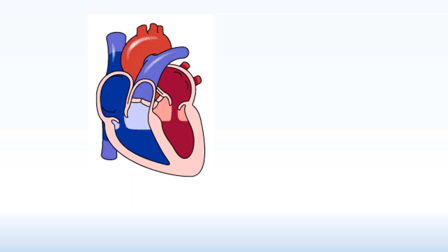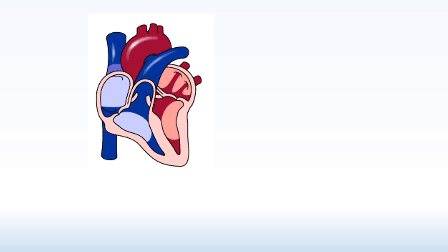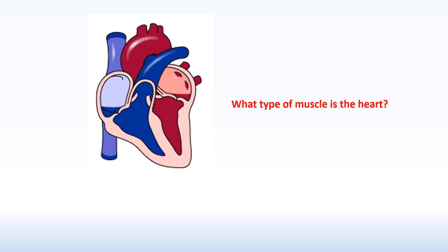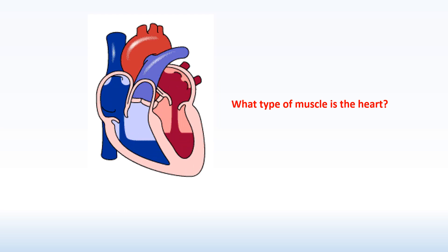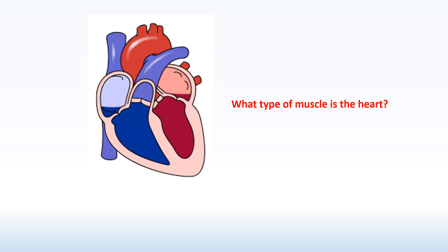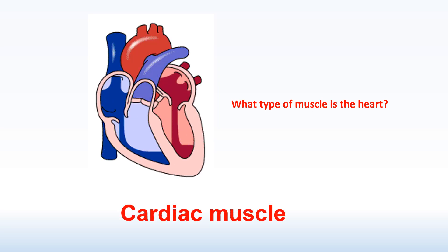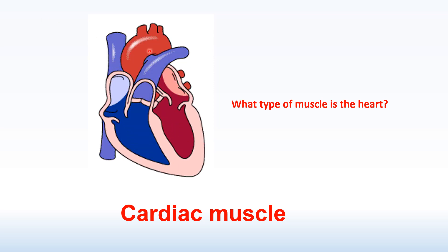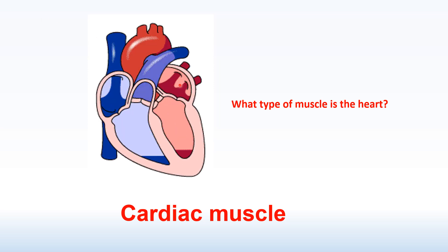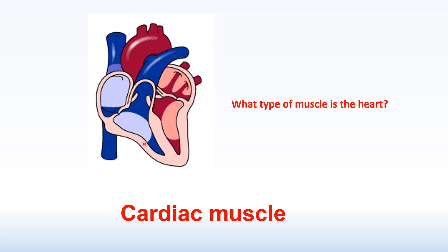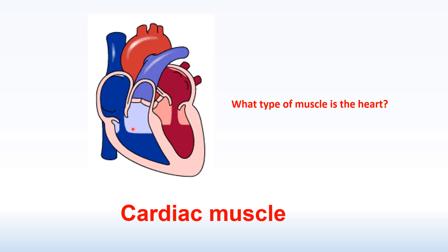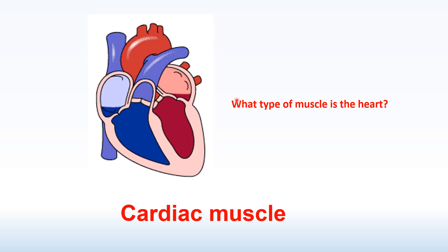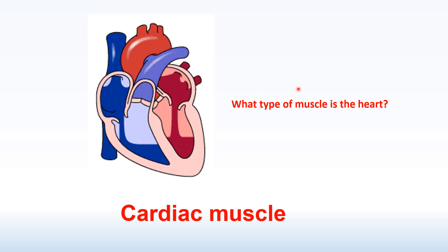Quick recap question: what type of muscle is the heart? Start to have a little think about why on the diagram here one side of the heart is blue and one side is red, and we'll come on to that shortly.